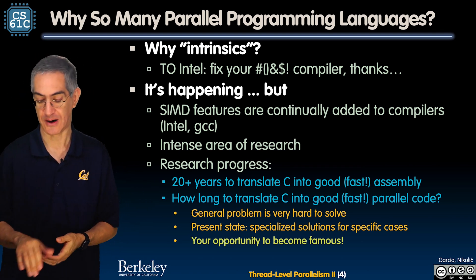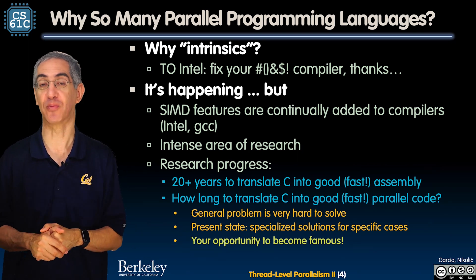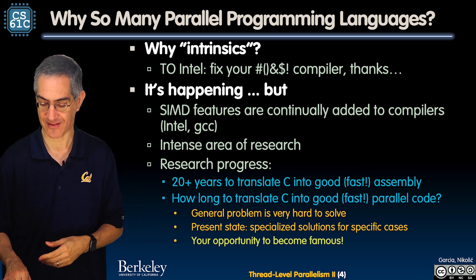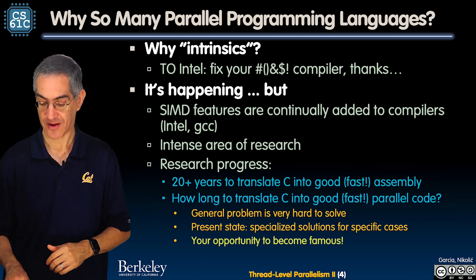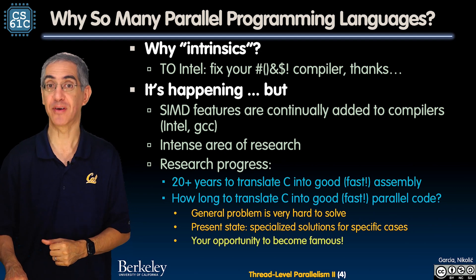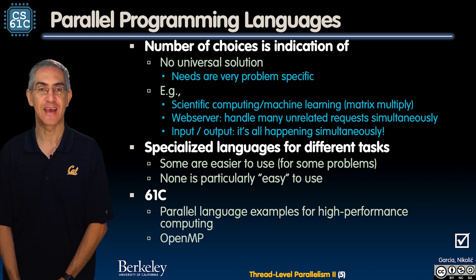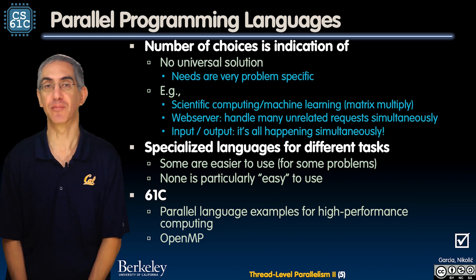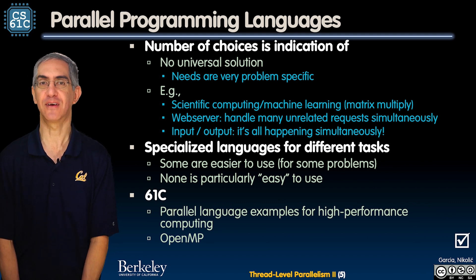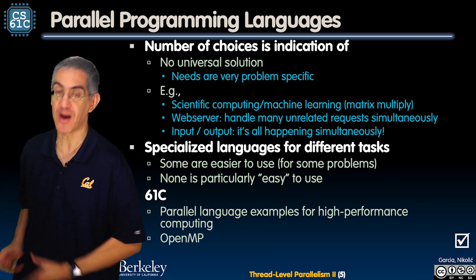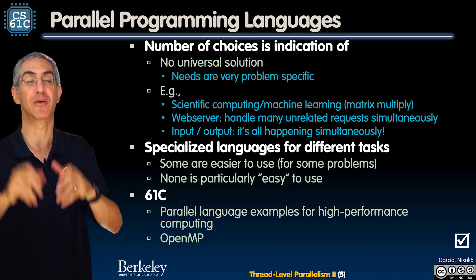Auto-parallelization is still considered an open problem. There are great cases in simple things — loops can be handled in interesting ways — but it requires a lot of work. If you have a breakthrough, talk to Professor Yellick and related people in our department. The large number of language choices is an indication that there is no universal solution. Everyone says it's not solved yet, so they make their own, and now you have all these people clamoring because nobody has really won.